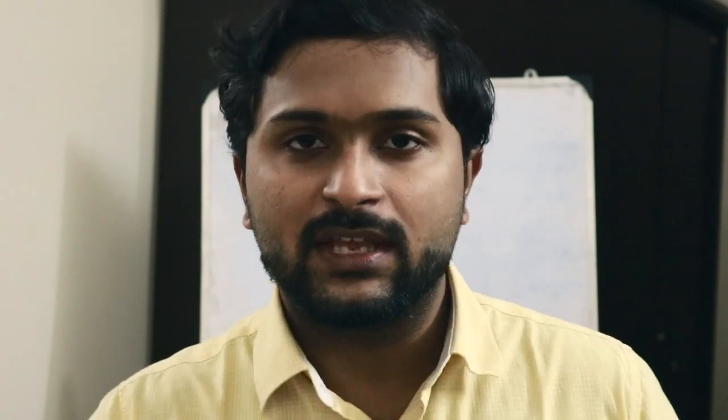Now let us see how we calculate the effective height of an antenna using the current distribution. We will consider two cases: one where the length of the antenna is L equal to lambda by 2, and the other where the length is L equal to lambda by 10.